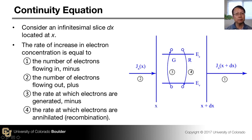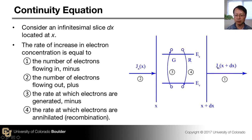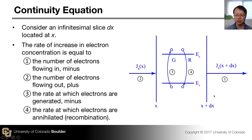We can set up a rate equation stating that the rate of increase in electron concentration within this volume equals: electrons flowing in (component 1, current density here), minus electrons flowing out, plus the generation rate, minus the recombination rate. This is basically the continuity equation.